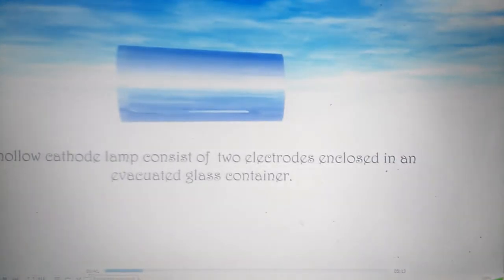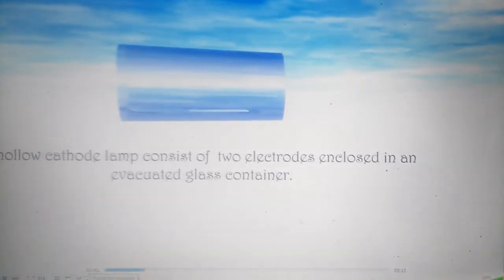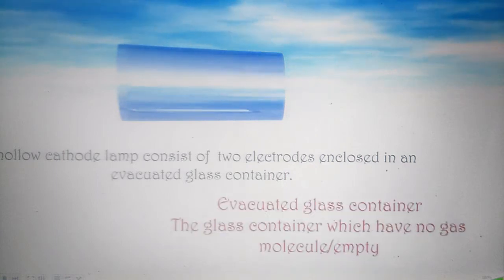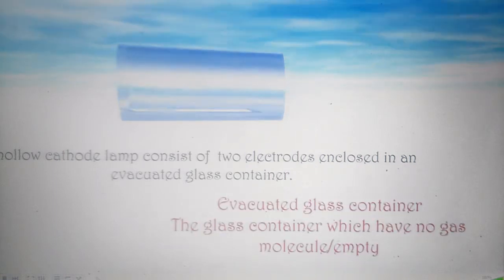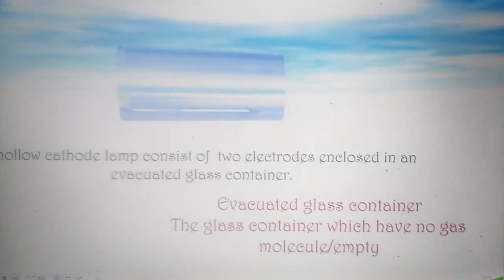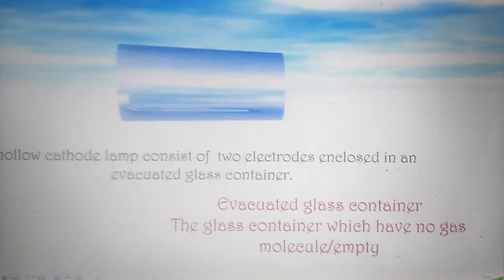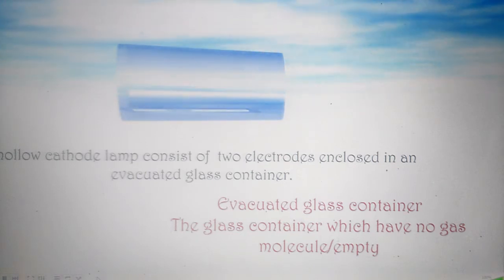Hollow cathode lamp consists of two electrodes enclosed in an evacuated glass container. An evacuated glass container is a container which has no gas molecules — it is empty.